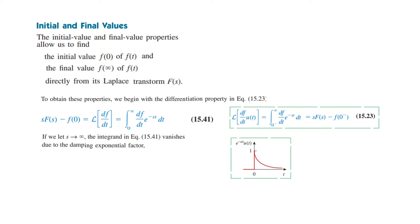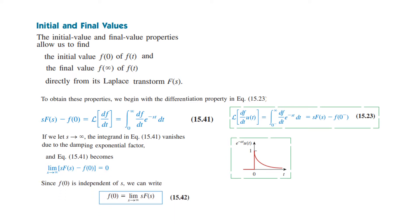Now if we let S go to infinity, this integral will vanish due to the damping exponential factor. If you look at the graph of e^(−at), as t increases it ultimately becomes zero. So the integral term becomes zero, and we can write that the limit as S tends to infinity equals zero. From here, F(0) equals limit S tends to infinity of S·F(s). This equation is called the Initial Value Theorem.